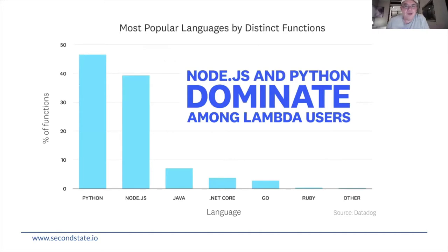What are the most popular programming languages developers use when writing serverless functions? They use Python and Node.js — no surprise there. Those are high productivity languages and it's easy to write applications in them, but they are also heavyweight languages, meaning they have a heavy runtime and somewhat slow performance. Developers write those applications in Python and Node.js, probably without thinking a lot about performance.